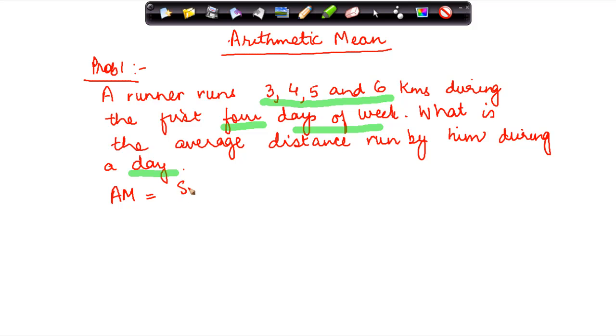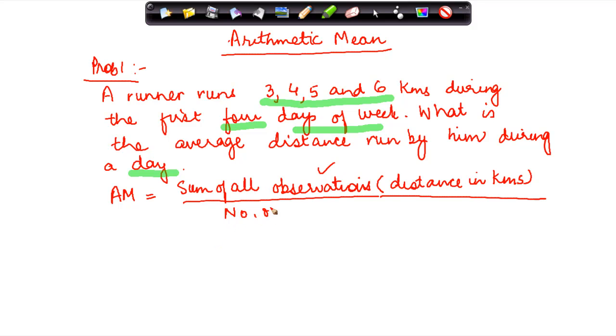Now what is the formula? It is sum of all observations. And what is the observation here? It's the distance in kilometers. Right? What is the distance in kilometers? This is the observation divided by the number of all observations.